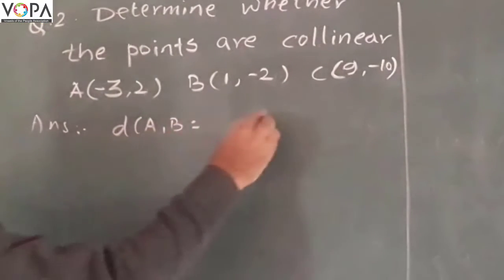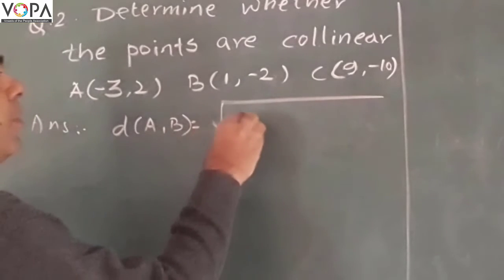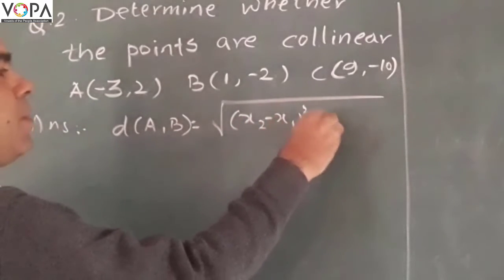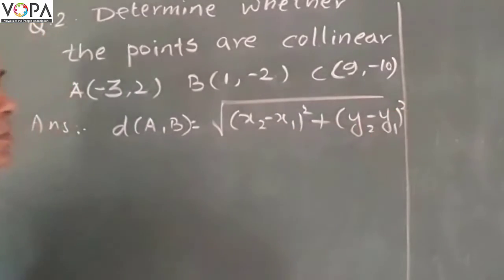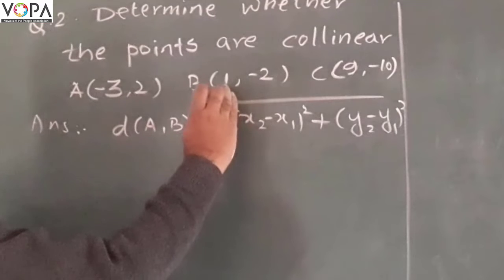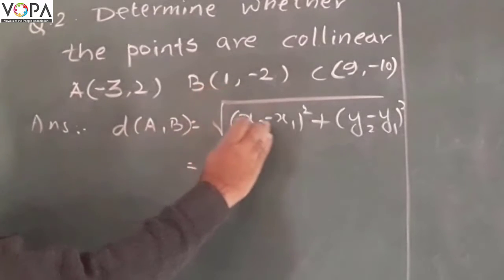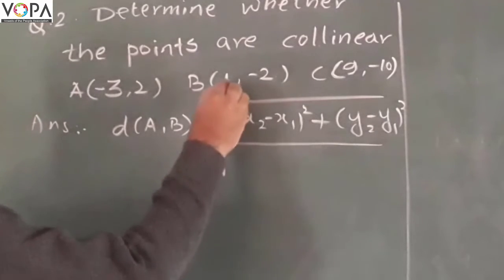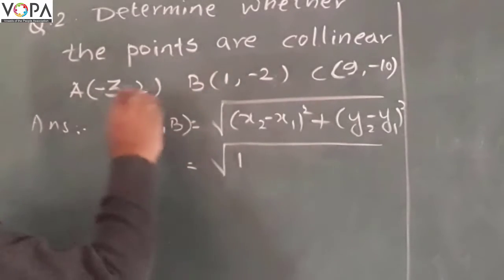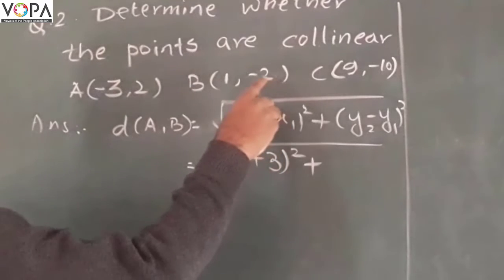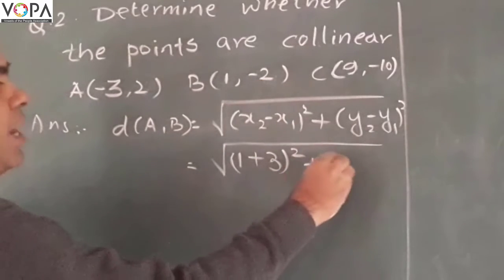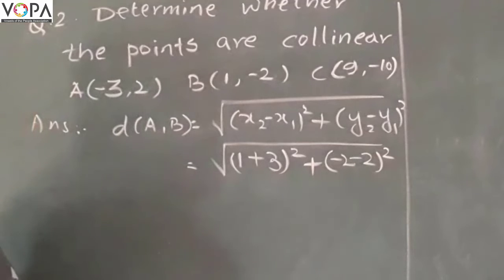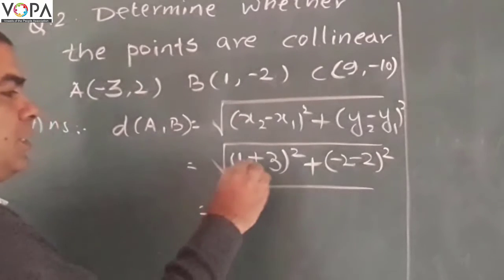Distance AB is equal to square root of (x2 minus x1) squared plus (y2 minus y1) squared. Now here x2 is 1 and x1 is negative 3. Put the values: 1 minus negative 3, and negative 2 minus 2. Now it will be (3 plus 1) which is 4 squared, plus (2 plus 2) equals to negative 4 squared.